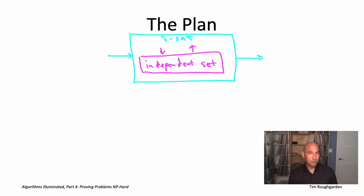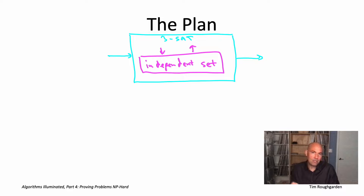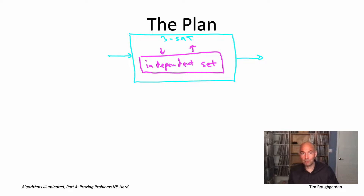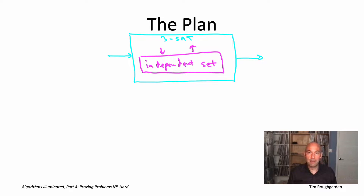That reduction was pretty conceptually straightforward because both problems involve directed graphs. The blue box is given a directed graph and asks whether a directed Hamiltonian path exists, and the subroutine also expected a directed graph. The one twist was that the cycle-free shortest path subroutine expected edge lengths, so we gave all edges length minus one to trick it into computing long paths. We just added minus one to every edge, fed it into the magenta box, and could immediately output what we needed.